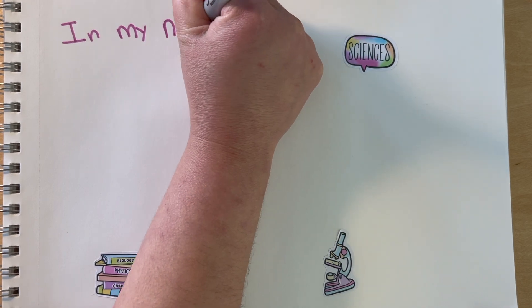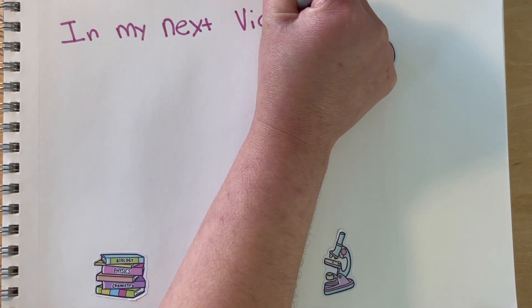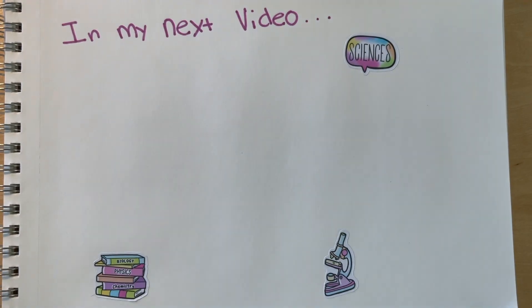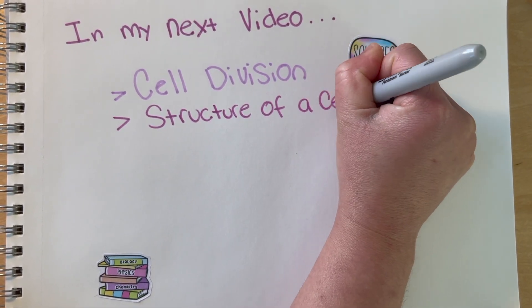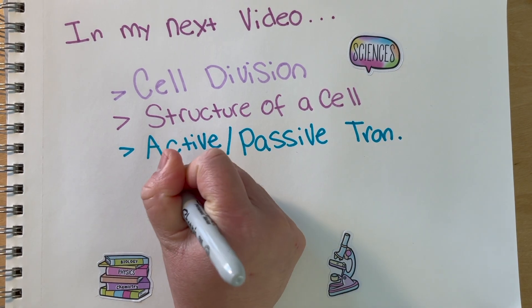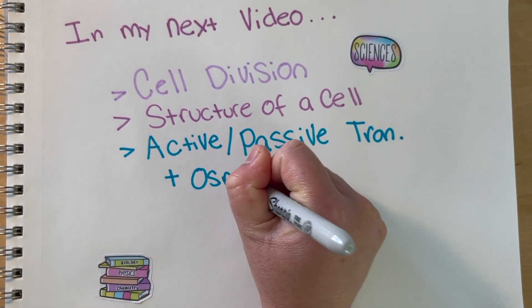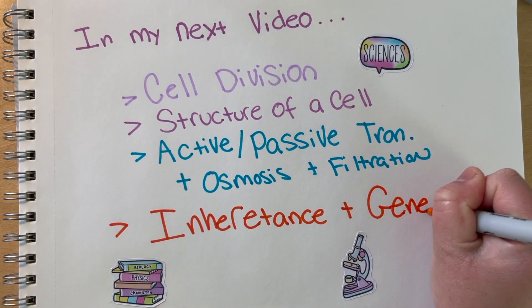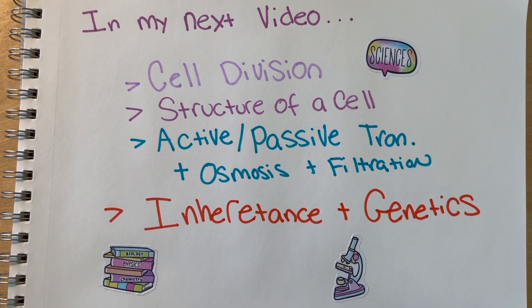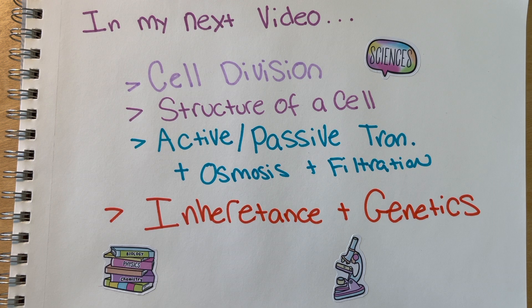This concludes this video. Thank you for being here and sticking around. I hope you learned something new. My next biology quick review for the ATI TEAS will cover cell division, cell structure, passive and active transport, osmosis, filtration, and inheritance patterns. The next videos will be densely packed. I cut this one short because nucleic acids are dense. Give your brain some rest. See you next time!